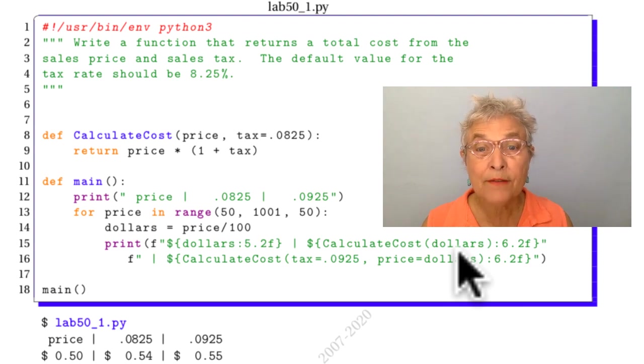And then we're going to calculate the cost without putting in a different tax rate. Therefore we get the 0.0825, and we do that one at 6.2 in case it bumps up because tax can do that to you.